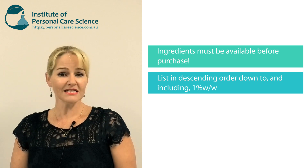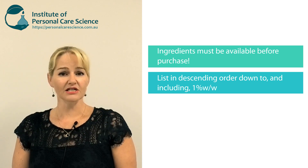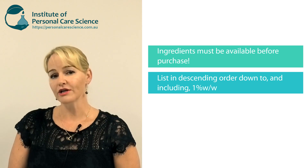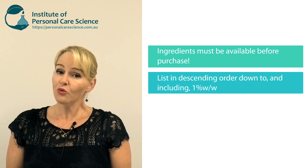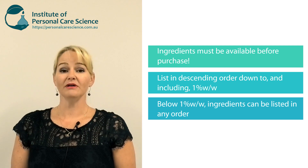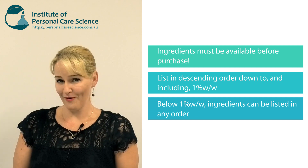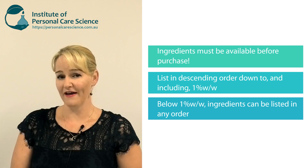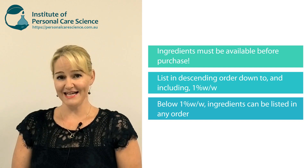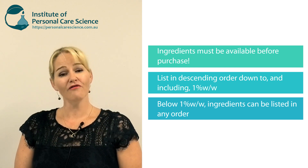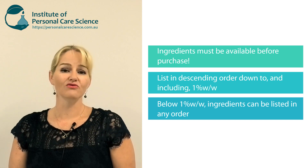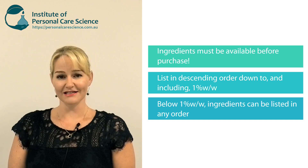Your ingredient list must be in descending order down to and including the one percent point. Below one percent, ingredients can be listed in any order, but please note it's below one percent where they can be listed in any order, not at one percent. At one percent or above, all of your ingredients must be listed in correct descending order.